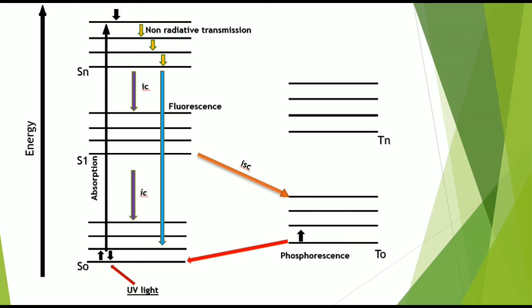The first way is non-radiative transmission, in which the electron shifts to a lower electronic level without radiating any radiation. The second way is IC, meaning internal conversion, in which there is a transition from a higher electronic level to a lower electronic level.